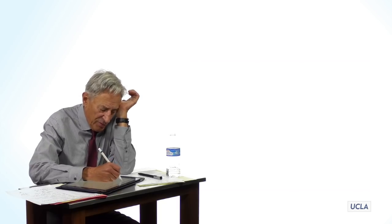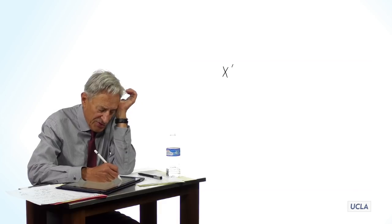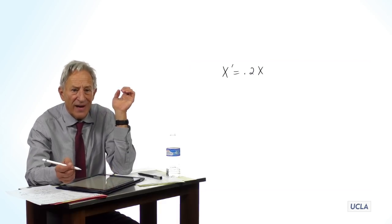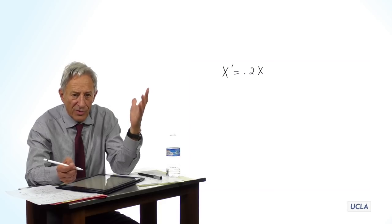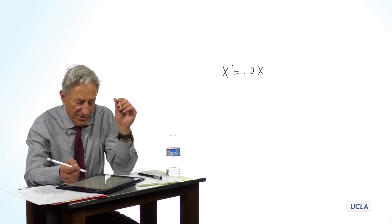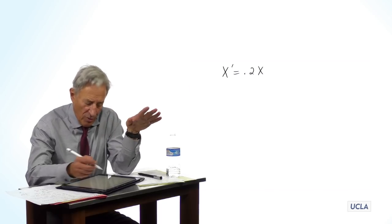So the question is, how do we understand this change equation, x prime equals 0.2x? What are we supposed to do with this? We're going to deal with this in a very systematic way.